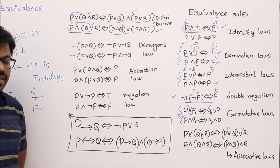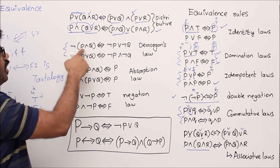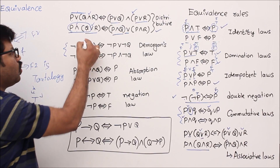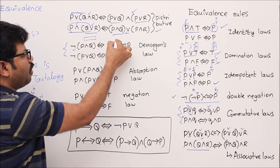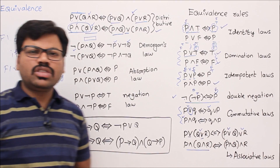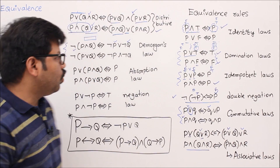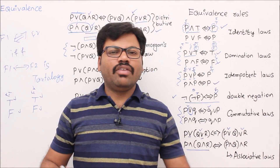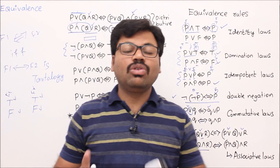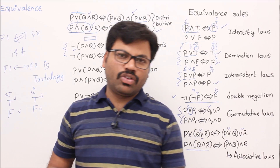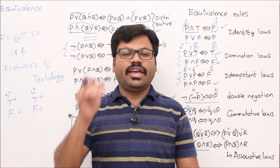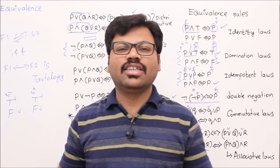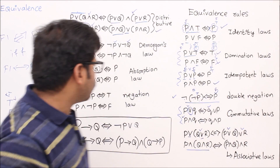Now come to De Morgan's law: ¬(p∧q) ≡ ¬p∨¬q. If you are unsure, draw the truth table for ¬(p∧q) and the truth table for ¬p∨¬q — everybody knows how to draw a truth table. You will realize both formulas have the same truth values. This is another way of confirming equivalence: whenever two formulas are equivalent, their truth tables will be identical.